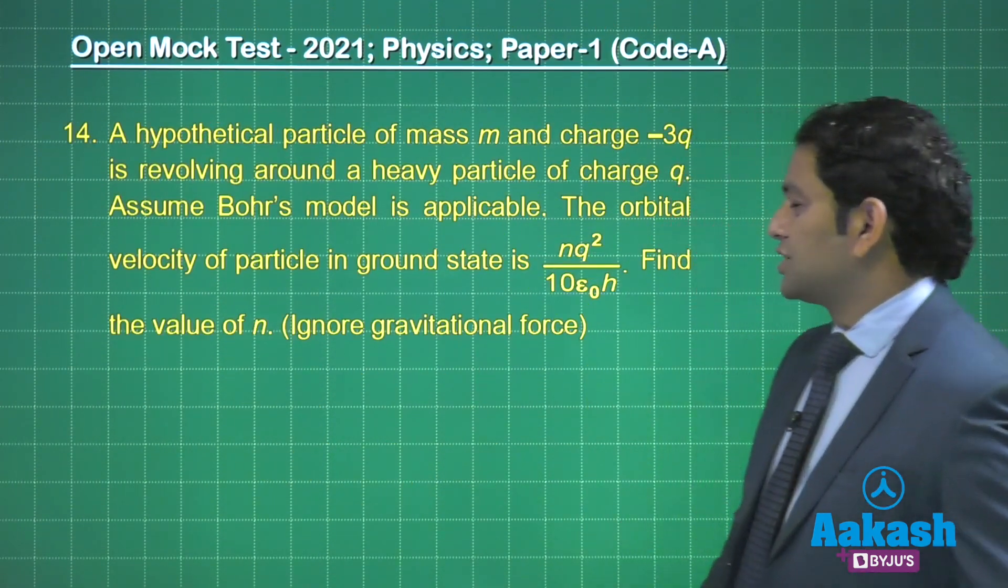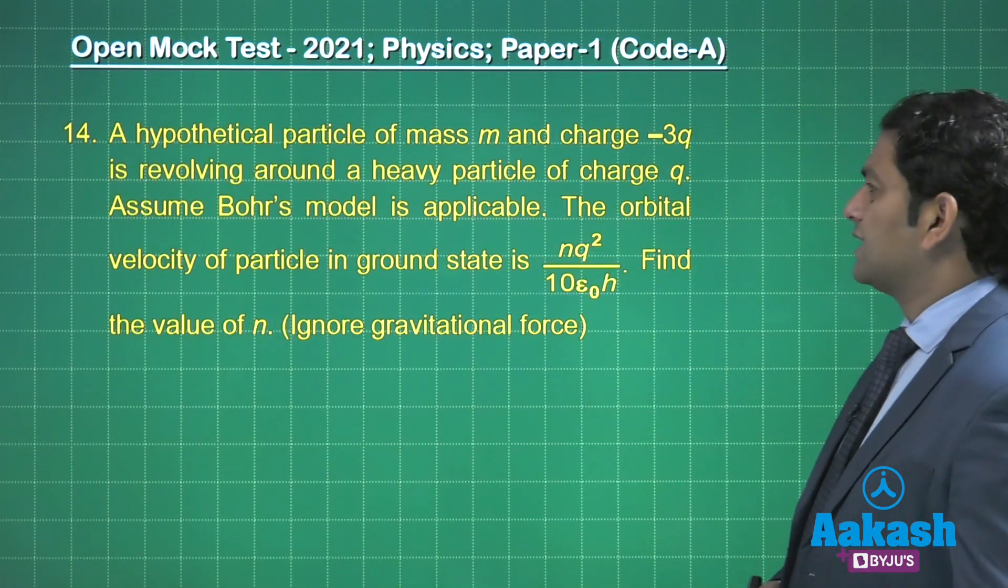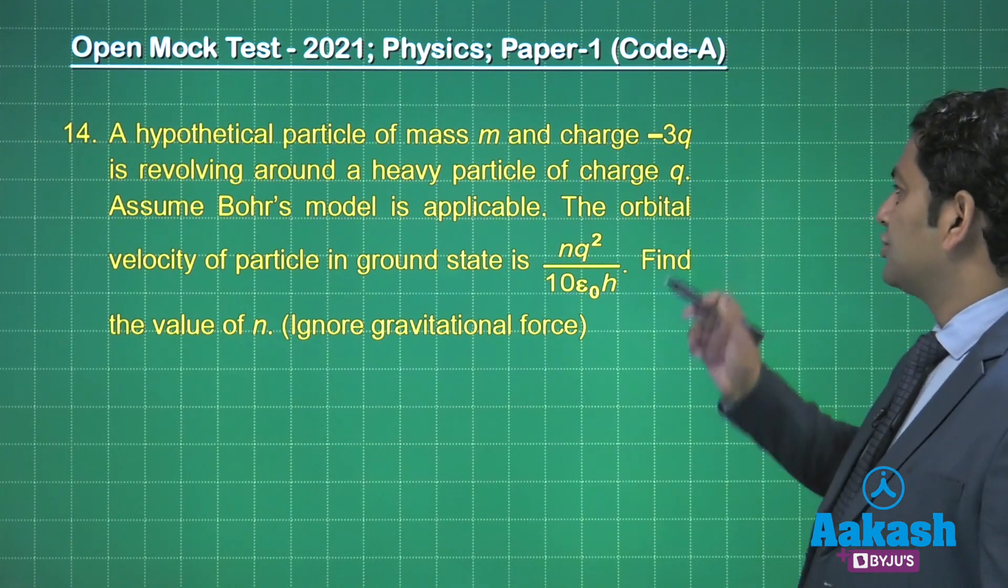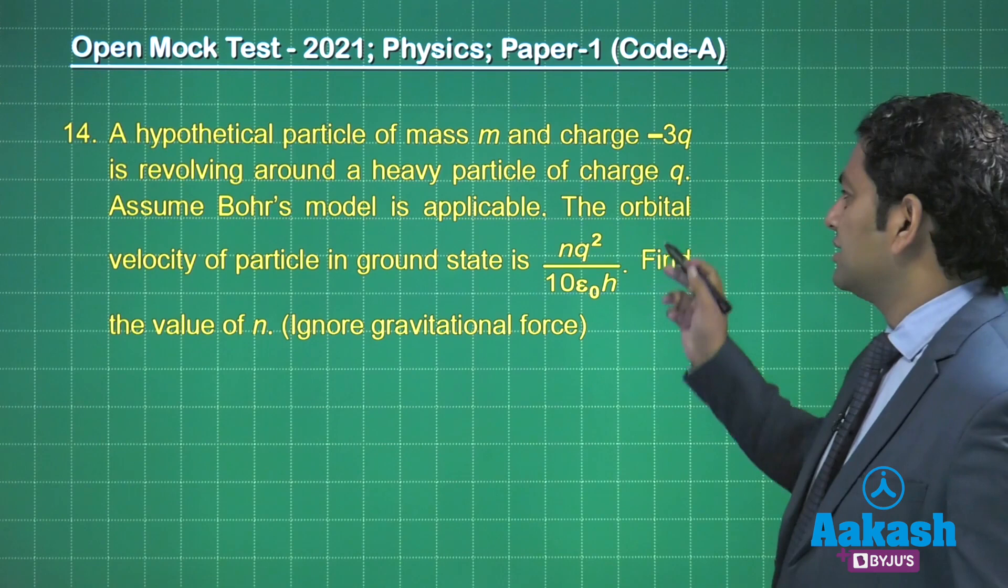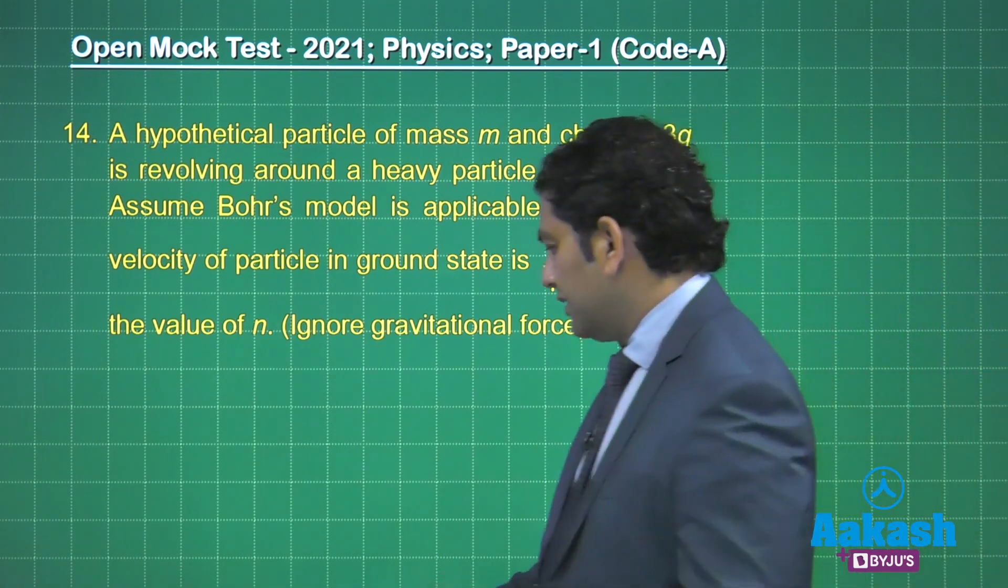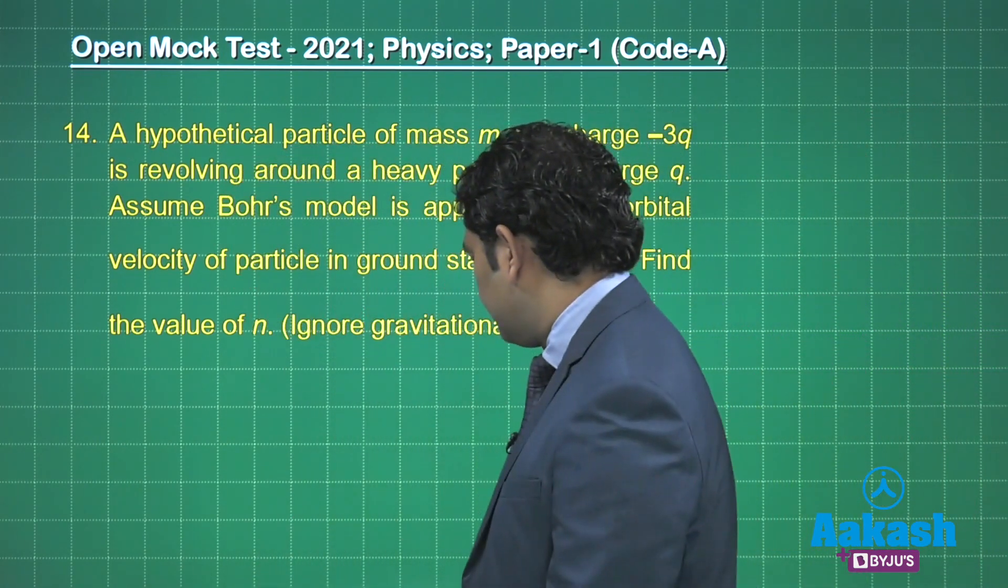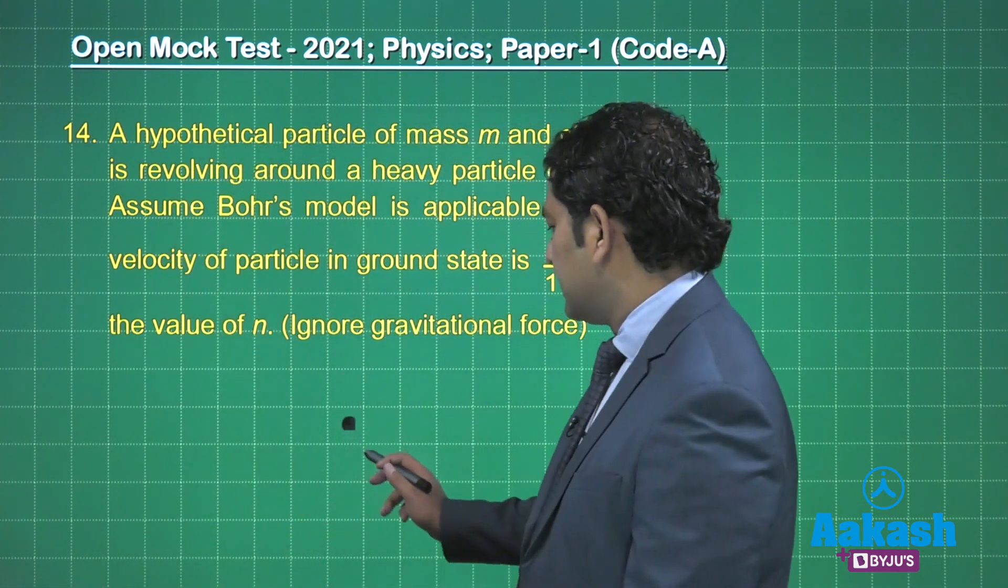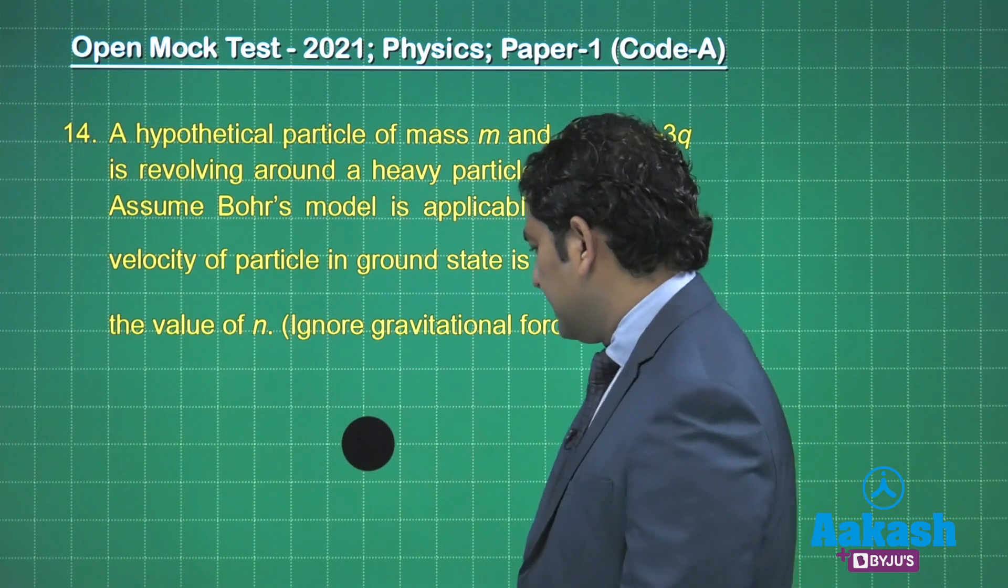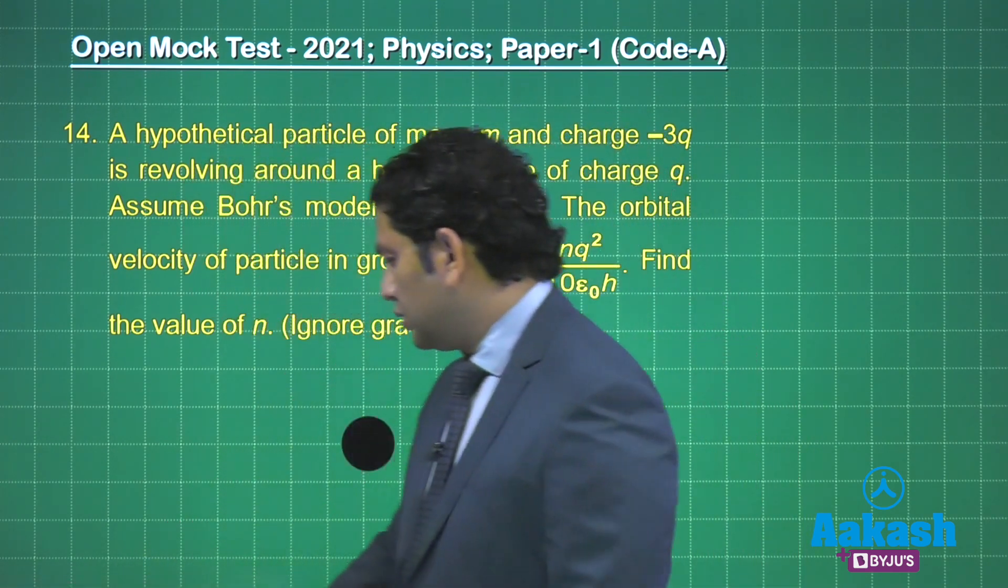Question number 14: A hypothetical particle of mass m and charge -3q is revolving around a heavy particle of charge q. I need to make a heavy particle first, so here is that heavy particle.